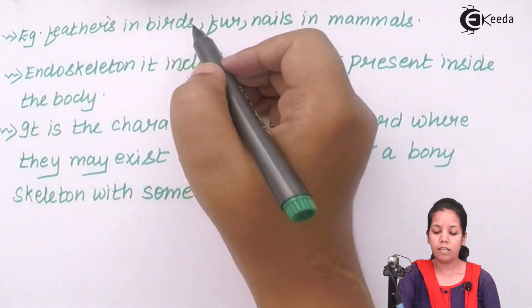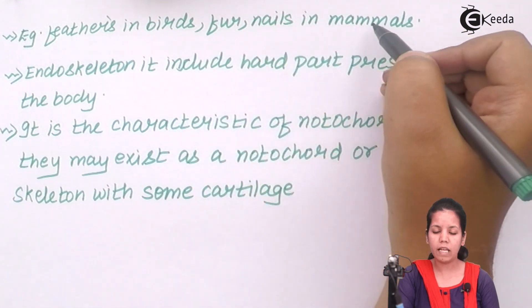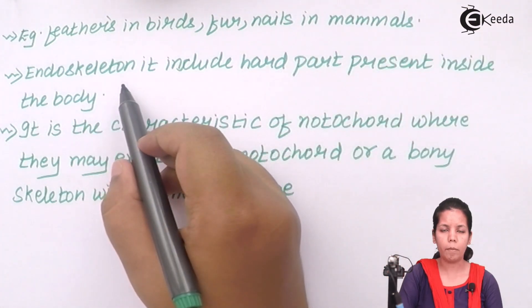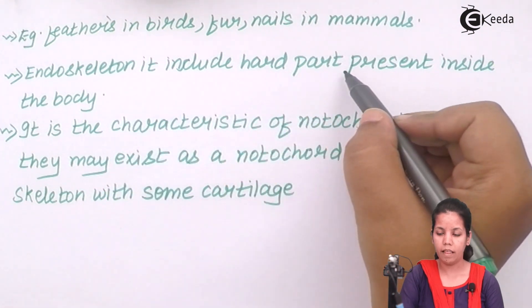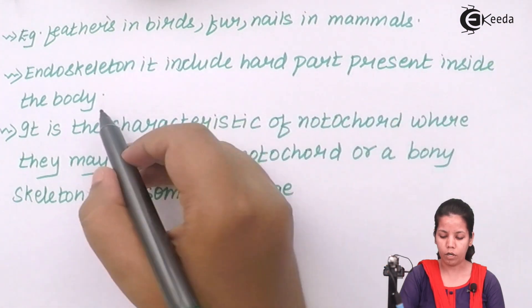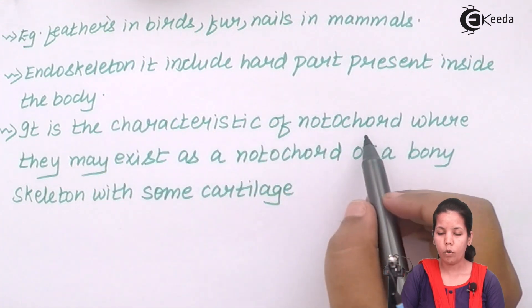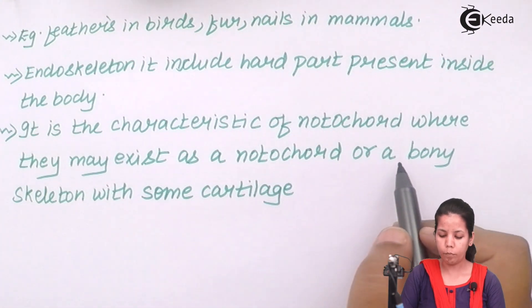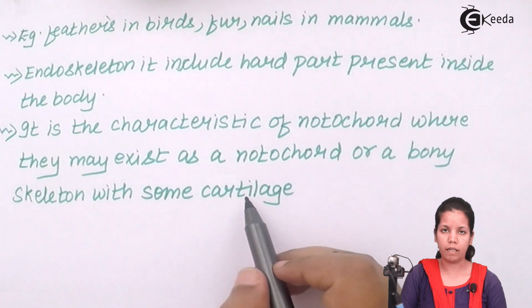Examples like feathers in birds, fur or nails in mammals or human beings are examples of exoskeleton. Now, if I talk about endoskeleton or something which is present inside, it includes the hard part that's present inside the body and this hard part is characteristic of notochord where they may exist as notochords itself or bony skeleton with some cartilaginous tissues or muscle.